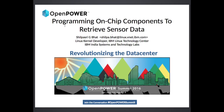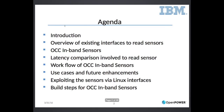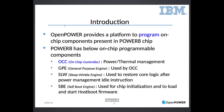This talk, filling in for colleague Shul Parsi, is about programming on-chip components to retrieve sensor data. It's a really good example of how an open ecosystem and OpenPOWER itself can enable innovation and thinking outside the box, even within a company like IBM. The agenda covers getting sensors in and out of the OCC, and how we can take something that is currently a higher latency way of getting measurements and turn it into something much lower latency.